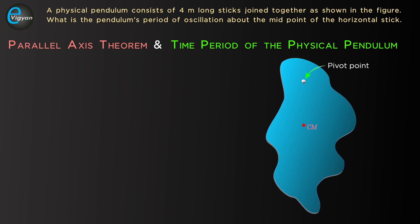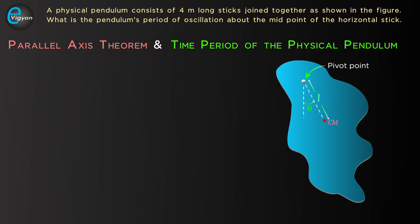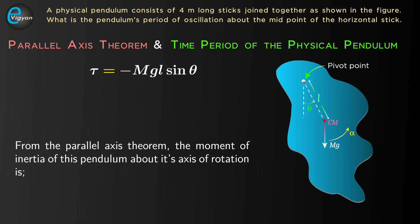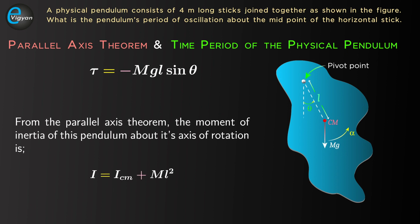Let at any time t, the angular displacement of the pendulum be theta and the angular acceleration be alpha. If M is the mass of the pendulum, then the gravitational force acting on it is Mg. Taking anti-clockwise direction as positive, the torque acting on the pendulum is tau equal to minus MgL sin theta, since the restoring torque is due to the Mg sin theta component acting in the clockwise direction. From the parallel axis theorem, the moment of inertia about the axis of rotation is I equal to ICM plus Ml squared.